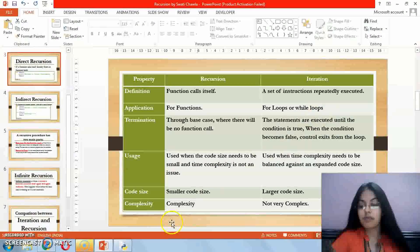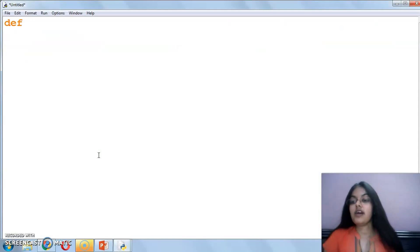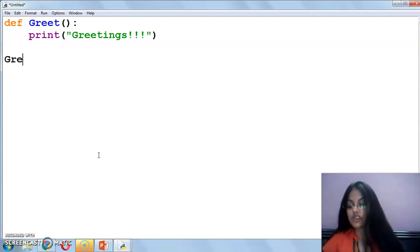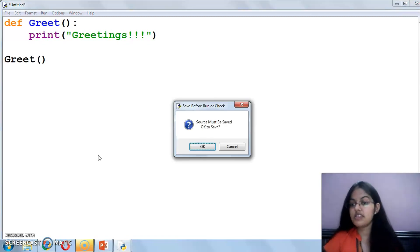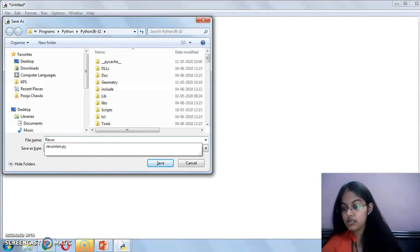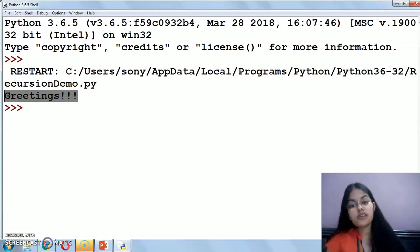Let's start with an example practically. I have opened this Python IDLE now. Let's open a new file. I am creating a function here with name greet, and here I am printing the message greetings. When I will execute this function, it simply prints the message greetings. Let's execute this. I am saving the file as recursion demo. So what will it do? It will simply print the message greetings.